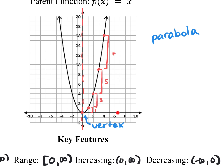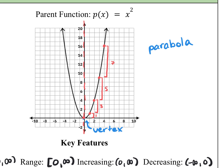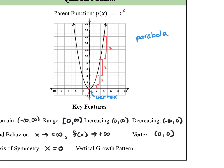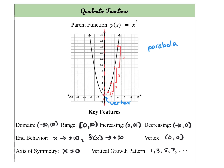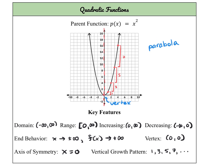So each coordinate to the right, I'm going to increase my y value according to this pattern: 1, 3, 5, 7, 9, 11, and so on. I call this the vertical growth pattern: 1, 3, 5, 7, and so forth. We can use this to help us graph — it's a quick and easy way to get accurate points to one side of your vertex, and then all you need to do is reflect those points over the axis of symmetry. So it's a really efficient way to graph accurately.